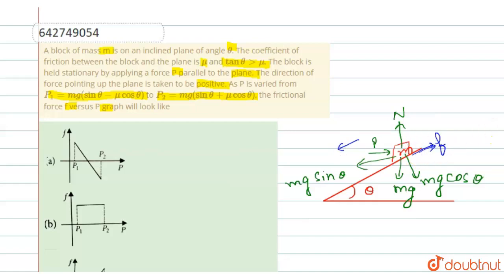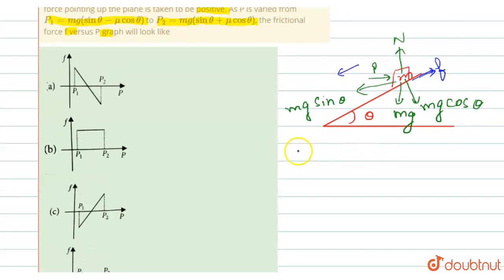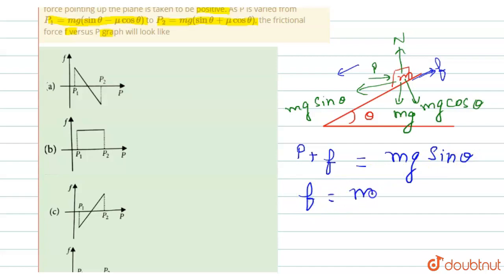In the first case, if the block tends to slide downwards, the frictional force acts up the plane. If we do not apply enough force p, the block will slide. At equilibrium, from the free body diagram we write: p plus f equals mg sine theta, from which the frictional force f equals mg sine theta minus p. This is the first equation.